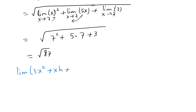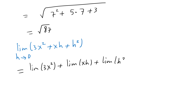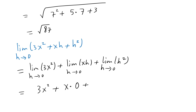Another example: here h goes to 0, not x. The limit of the first term plus the limit of the second term plus the limit of the third term as h goes to 0. Since h goes to 0, the other variable x is just a constant, so you get 3x², and h terms give 3x times 0 plus 0², so the answer is 3x².